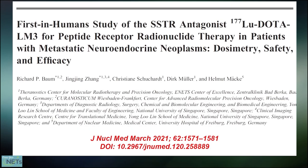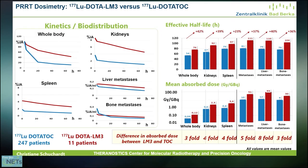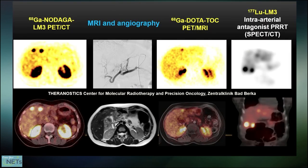We have also used LM3, a novel antagonist labeled with lutetium, in patients and have shown, if you look at dosimetry, that the uptake in the metastases is about five to eight fold higher — for example, in liver and in lymph node metastases — as compared to our standard DOTA-TOC, and also that the residence time in tumor is higher.